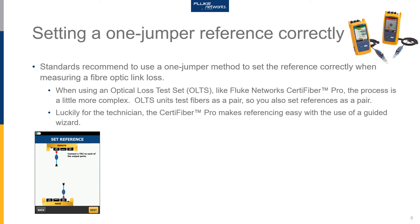Things change a little bit when you get to an optical loss test set. When using an optical loss test set like the Fluke Networks CertiFiber Pro, the process is a little more complex. Optical loss test sets test fibers as a pair, so you also set references as a pair. This means you have four test reference cords rather than two. If you're testing multimode fiber, remember the launch cords must be encircled flux compliant. The CertiFiber Pro has a built-in guided wizard, so when you're ready to start, all you need to do is hook up your launch cords.